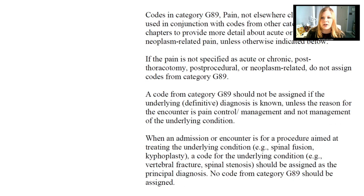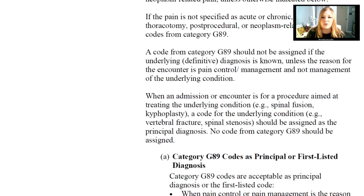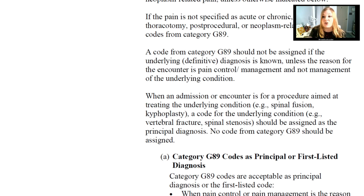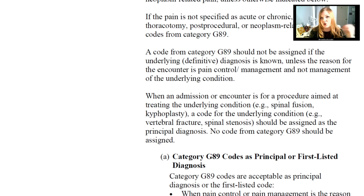A code from category G89 should not be assigned if the underlying, which is the definitive diagnosis, is known — unless the reason for the encounter is pain control or management and not management of the underlying condition. When an admission or encounter is for a procedure aimed at treating the underlying condition, such as a spinal fusion, a code for the underlying condition, not the pain, should be assigned as the principal diagnosis. No code from category G89 should be assigned in that case because we're just treating that condition, not the pain.